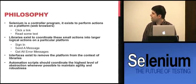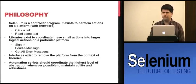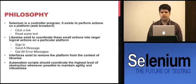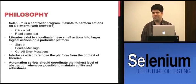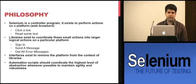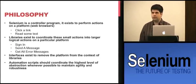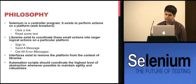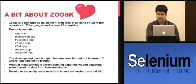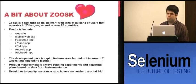Automation scripts should coordinate the highest level of abstraction wherever possible to maintain agility and robustness. Business logic can apply across multiple platforms — you can sign in on the Facebook app and on the website. If we write a test that deactivates an account through an API call and then validates sign-in, we don't need to write an individual test for each platform. And if the logic changes, we update one test.